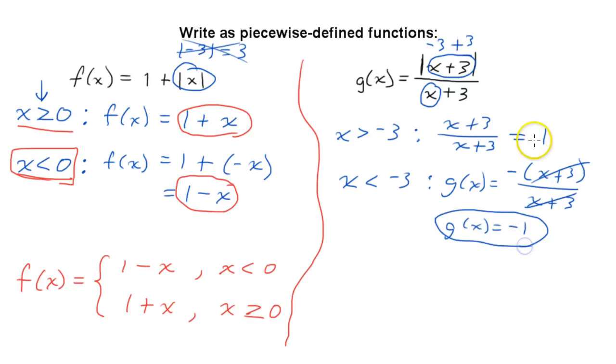So those are the two pieces depending on these two different intervals for x. So again writing this in piecewise defined notation, we get it like this, and we say when x is less than negative 3, then our function is simply negative 1. But when x is greater than negative 3, our function is defined as just 1. Alright, I hope that helps.